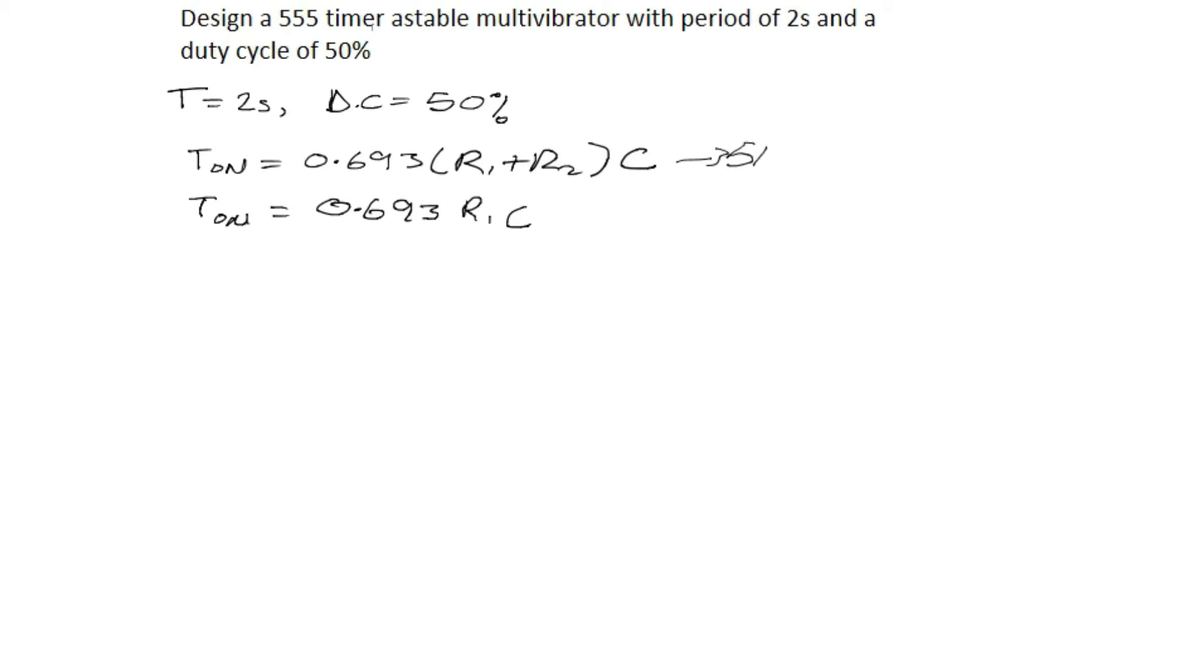Always remember this range is for any range that is greater than 50%, while this one is for ranges that are less than or equal to 50%. Now since we are having our duty cycle to be 50%, this is the formula we are making use of.